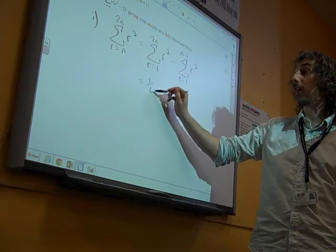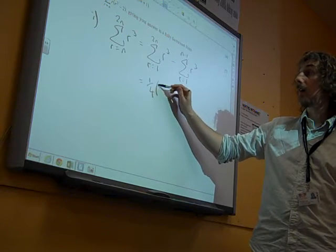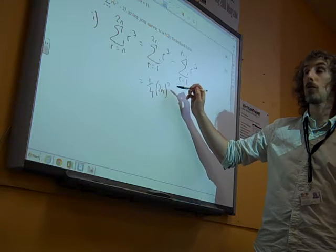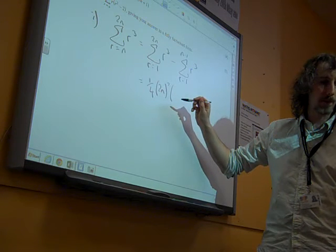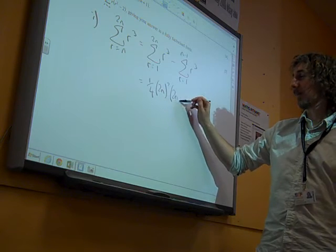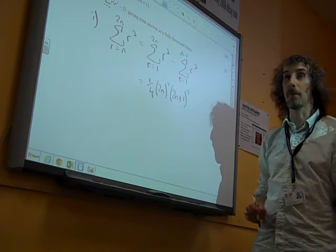So now we just stick that into the formula, which we have learned. It's in the formula booklet, isn't it? Which is 1 quarter N squared. So that's 2N squared. And then it's N plus 1. So it's 2N plus 1. Sorry, I forgot the formula for the moment. It is in the formula booklet.